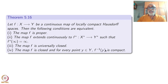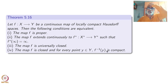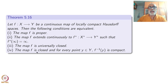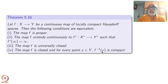If f is a proper map, singleton y is always compact, so f-inverse of y will be compact — but this condition is much weaker than properness. Along with just closedness of the map, however, it gives a proper map. This characterization is used quite often rather than the others for proper maps.